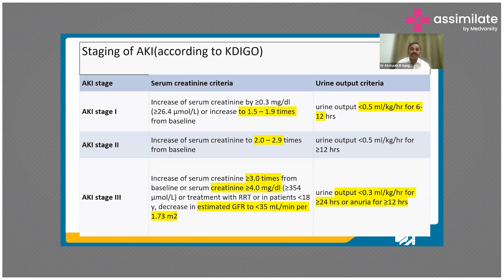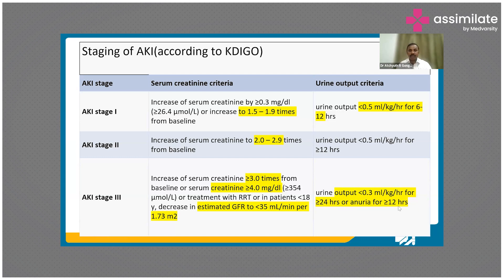In patients less than 18 years, an estimated GFR of less than 35 ml per minute per 1.73 meters squared is considered Stage 3. For urine output: Stage 1 and Stage 2 is less than 0.5 ml per kilo per hour for 6 to 12 hours, and for more than 12 hours respectively. Stage 3 is more than 24 hours with urine output less than 0.3 ml per kilo per hour. For example, a 60 kilo person with urine output less than 18 ml for more than 24 hours, or anuria for more than 12 hours, is AKI Stage 3.